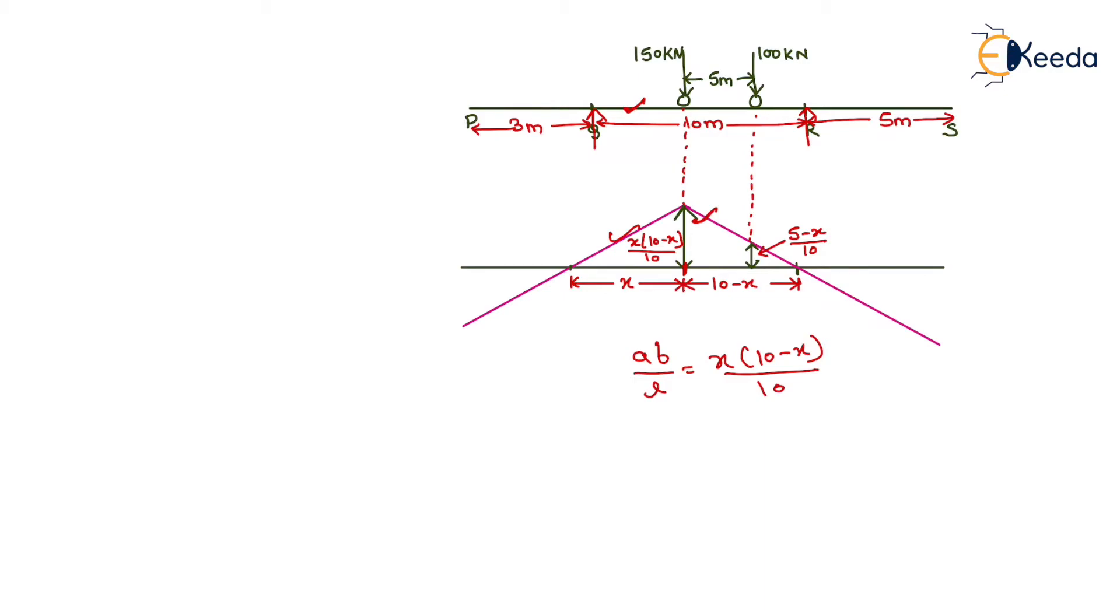We need to determine the ordinate for this 100 kN load also. Using the similar triangle concept, it equals (5-X)/10. Now we have both ordinates. For finding the maximum sagging moment, we multiply the load with the ordinate.